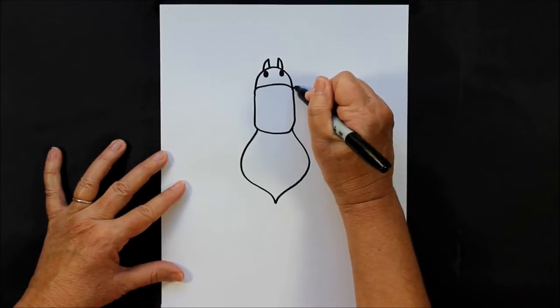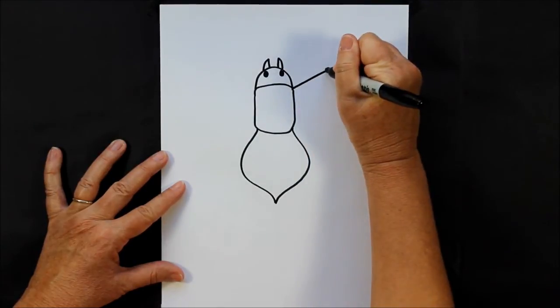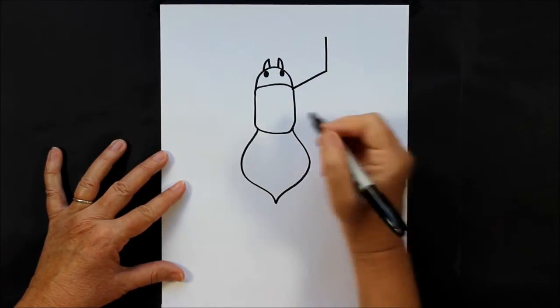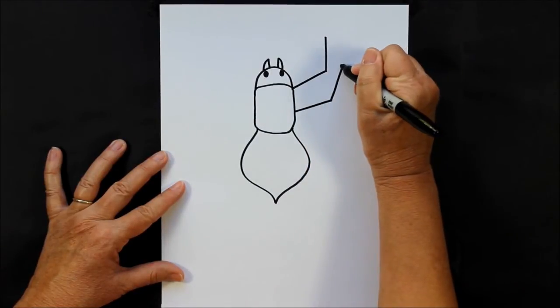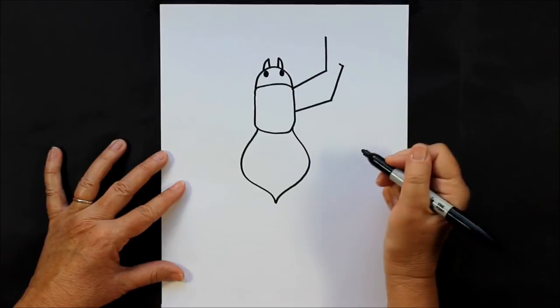Now for his feet and his legs: straight lines out and up, out, up and over, with a tiny little line for his foot.